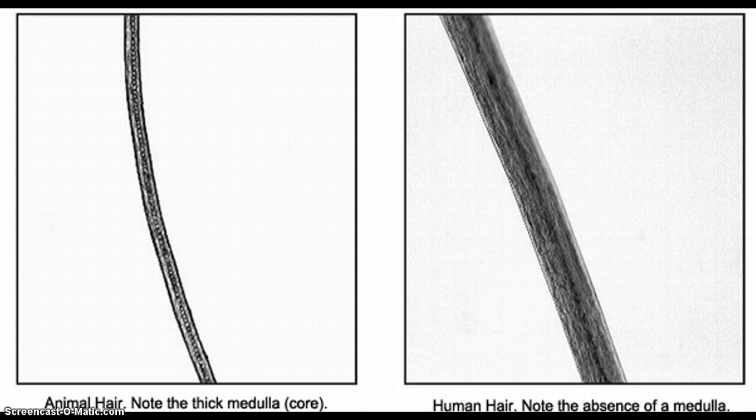There's also the difference between the pigments. The pigments in animal hair tend to clump, which you can sort of see. Whereas in human hair, the pigments are more uniformly distributed. So it's a pretty constant color throughout. Also, animal hair will show distinct banding, which is different sections of hair that differ dramatically in color. You can see the top part of the animal hair is very dark, and then it slowly gets lighter. Whereas human hair, the color is fairly constant throughout.